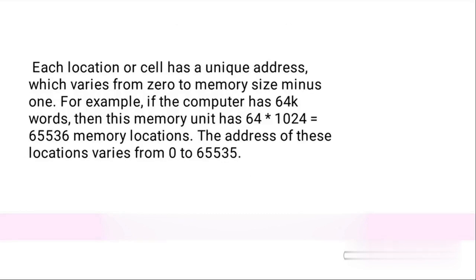Each location or cell has a unique address which varies from 0 to memory size minus 1. For example, if the computer has 64K words, then this memory unit has 64 x 1024 equals 65,536 memory locations. The address of these locations varies from 0 to 65,535.